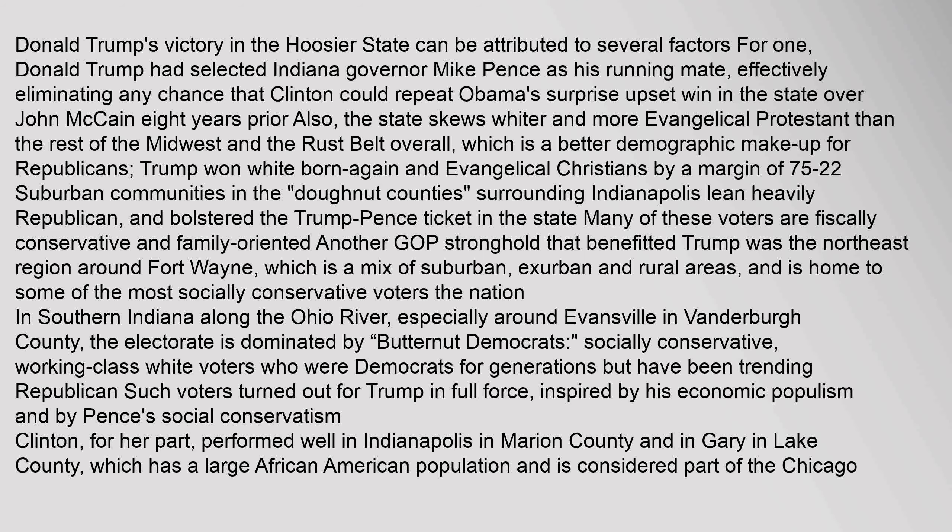Also, the state skews whiter and more evangelical Protestant than the rest of the Midwest and the Rust Belt overall, which is a better demographic makeup for Republicans. Trump won white born-again and evangelical Christians by a margin of 75–22. Suburban communities in the 'Donut Counties' surrounding Indianapolis lean heavily Republican and bolstered the Trump-Pence ticket. Many of these voters are fiscally conservative and family-oriented. Another GOP stronghold that benefited Trump was the northeast region around Fort Wayne, a mix of suburban, exurban, and rural areas.